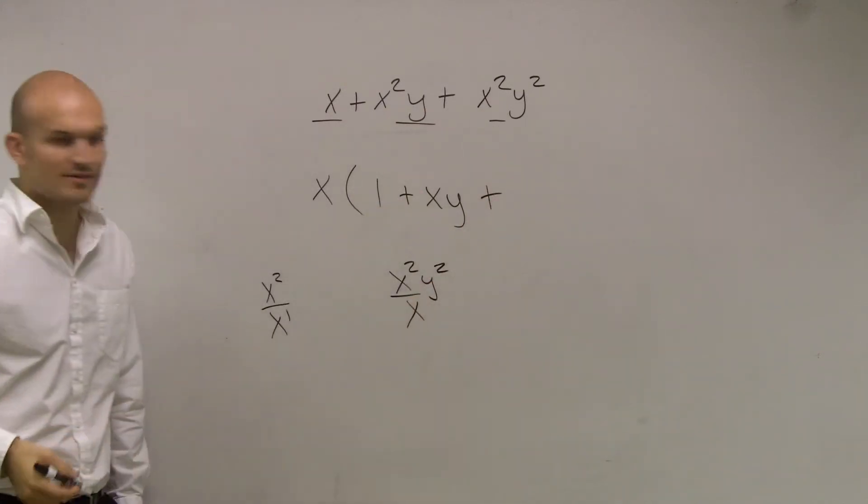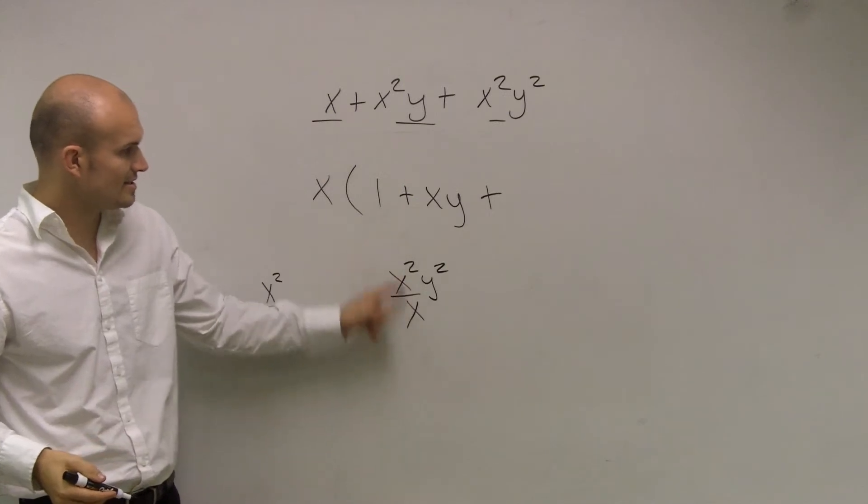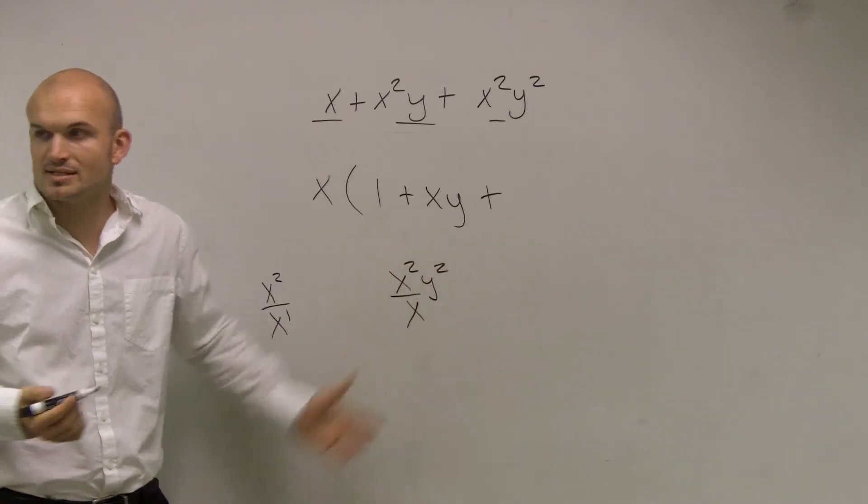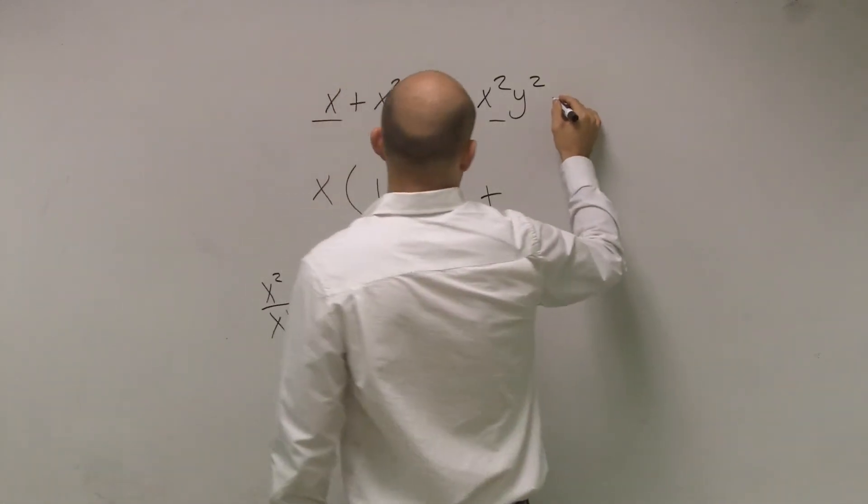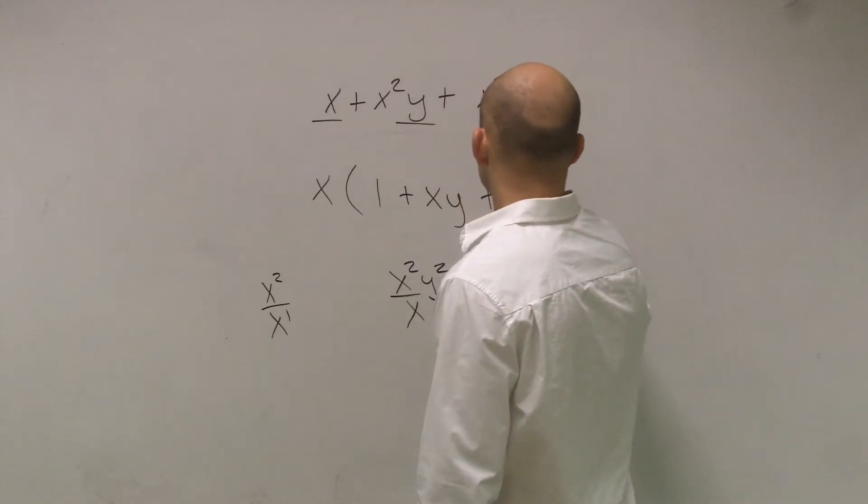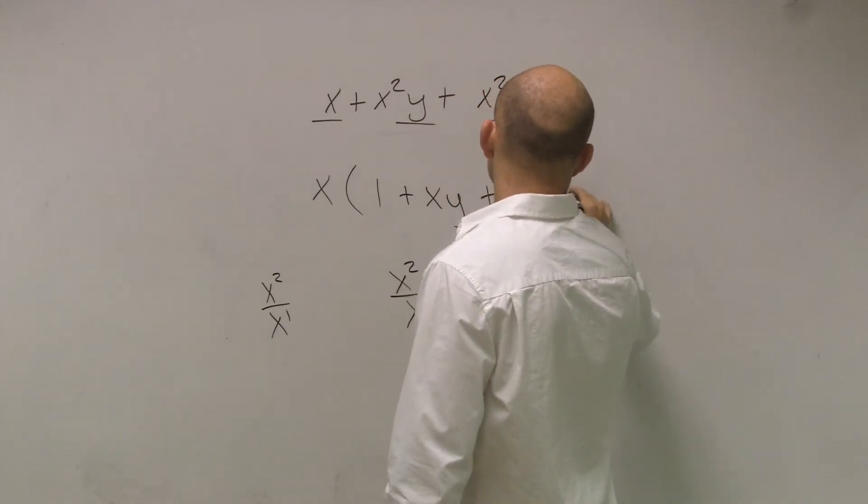Plus, what about if we do x squared y squared divided by x? Well, I'm still going to get the same x term, and then I'm just going to still have my y squared there. So that's going to be plus xy squared.